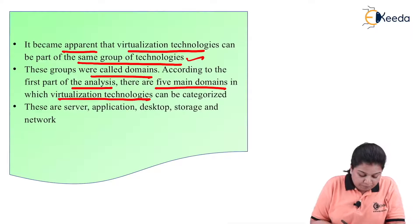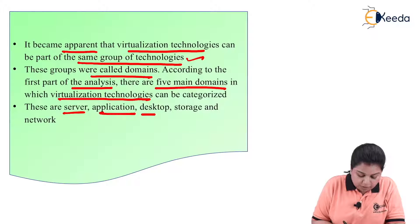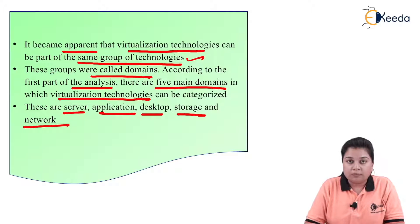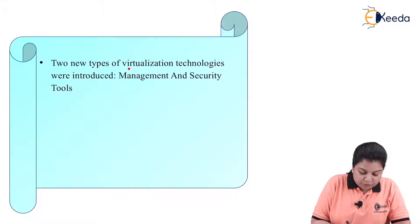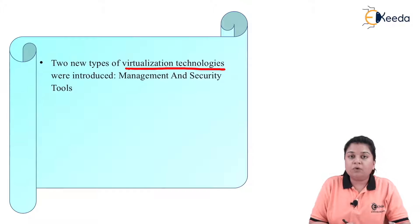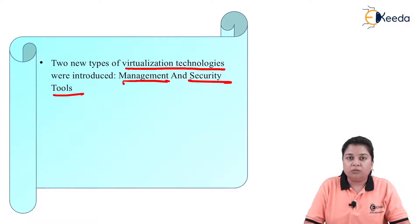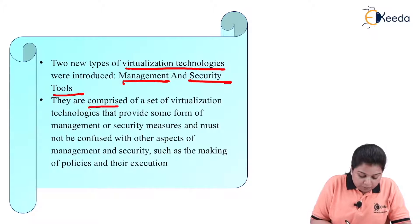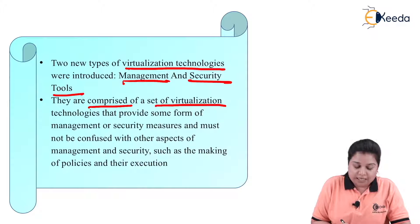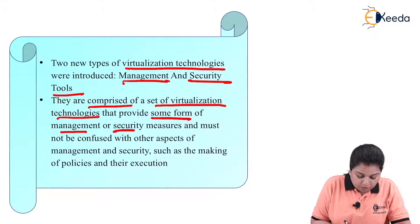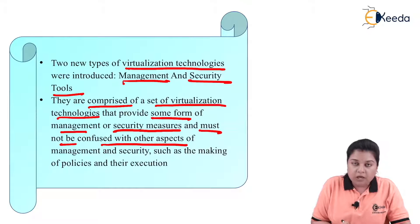The five domains are: server, application, desktop, storage, and network. Additionally, two new types of virtualization technologies were introduced: management and security tools. They comprise a set of virtualization technologies that provide some form of management or security measures, and must not be confused with other aspects of management and security.